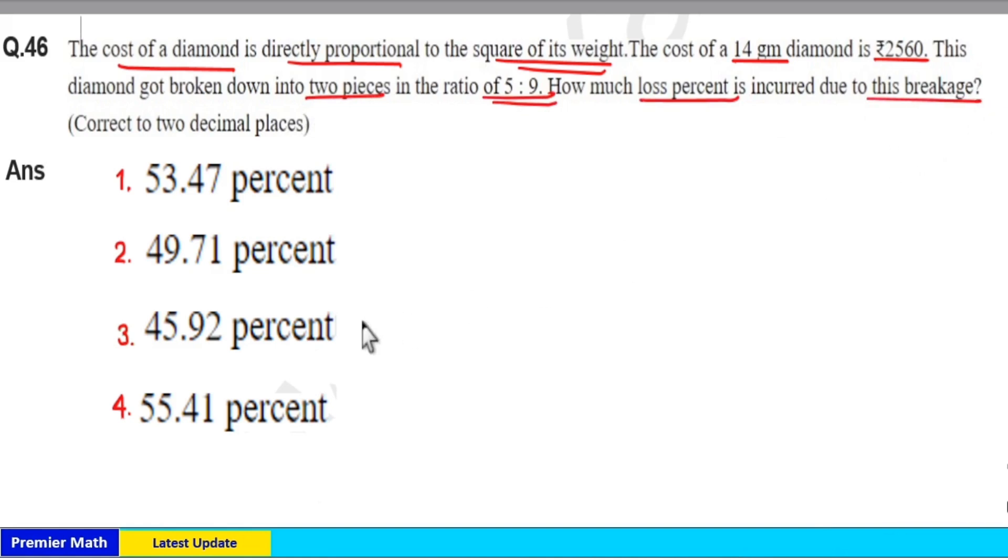Here, if you take the difference between 14 square and sum of 5 square and 9 square, that is the loss. This is because cost is directly proportional to square of its weight. Initially this diamond weighs 14 grams.